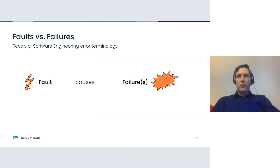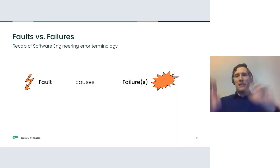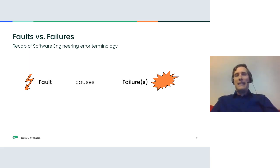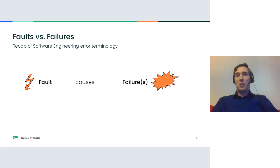A quick recap: in practice we talk about errors, but more precisely there is an event that creates a fault, which causes one or more failures. Observed in software, those could be error codes being returned, error messages printed, or just something not behaving as originally intended.